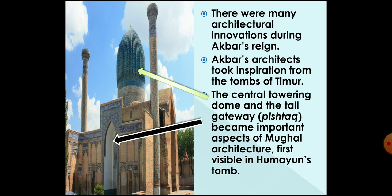The architects took inspiration from the tombs of Timur, who was the Mughals' ancestor from Central Asia. In this way, the central towering dome and the tall gateways, as you can see in the image, became important features of Mughal architecture. The tall gateway was called Pishtak, and these features became visible for the first time in Humayun's tomb.